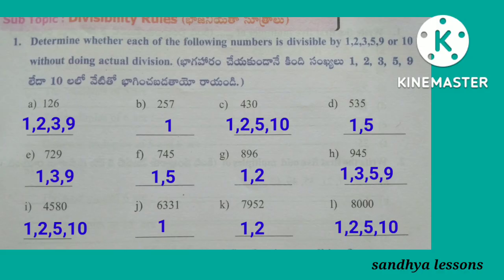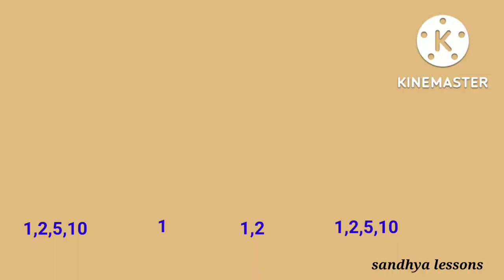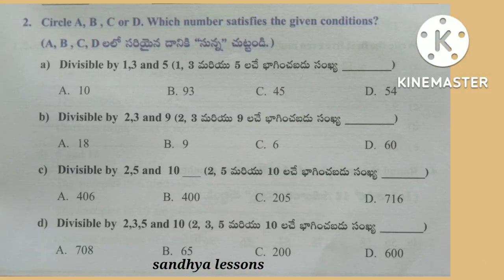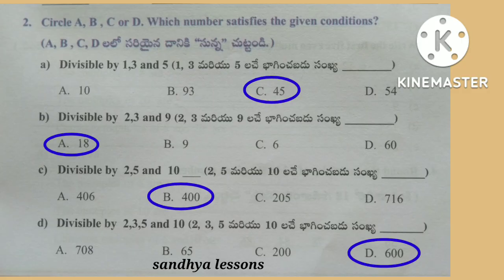7,952 is divisible by 1 and 2. 8,000 is divisible by 1, 2, 5, and 10. Second Roman: Circle A, B, C, or D — which number satisfies the given condition? The number divisible by 1, 3, and 5 is 45. The number divisible by 2, 3, and 9 is 18. The number divisible by 2, 5, and 10 is 400. The number divisible by 2, 3, 5, and 10 is 600. The number divisible by 2, 5, and 10 is 500.